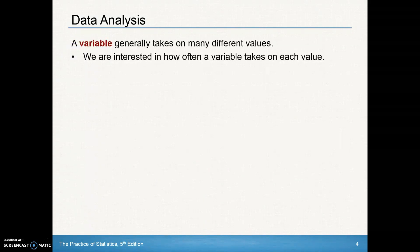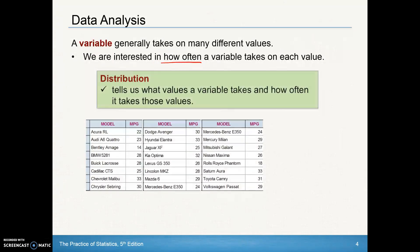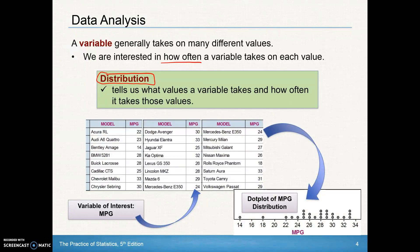A variable generally takes on many different values. We're interested in how often a variable takes on each value, and that's what we'll call a distribution. Distribution tells us what values a variable takes and how often it takes those values. As an example below, we've got several models of cars here and their miles per gallon. So what we want to do is take that variable of interest, that miles per gallon, and graph it. There's a distribution. We can see this data a little bit more, how it's spread, where its center is, kind of where it's clustered.